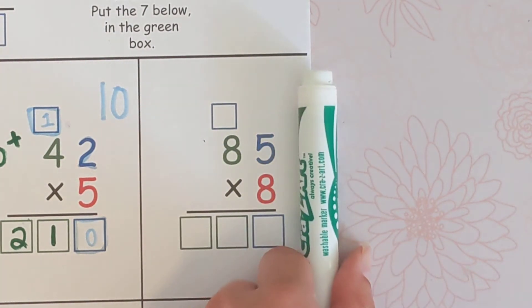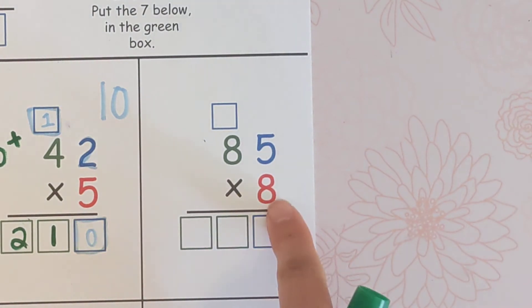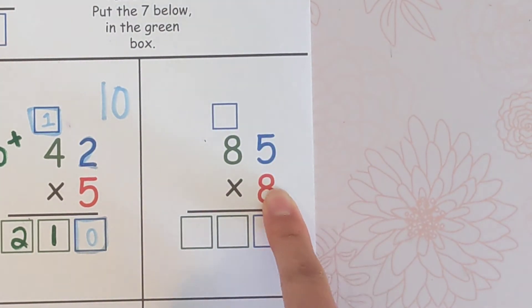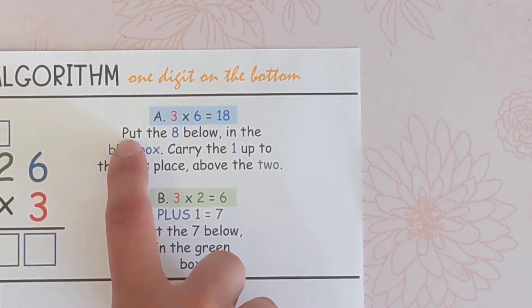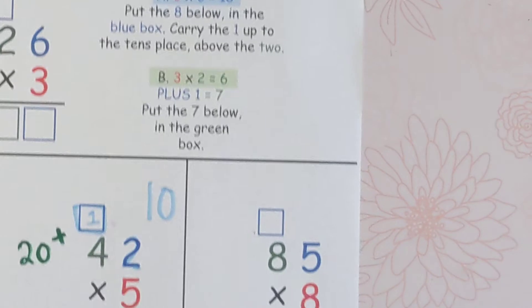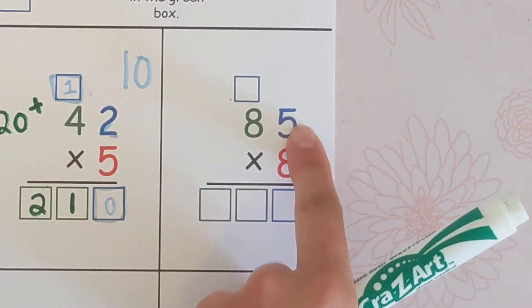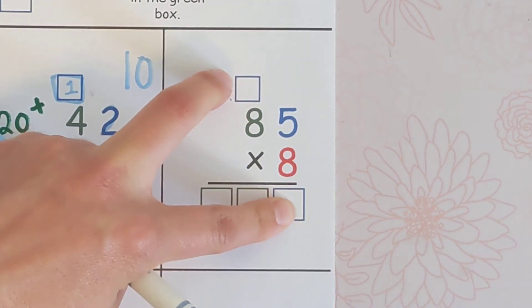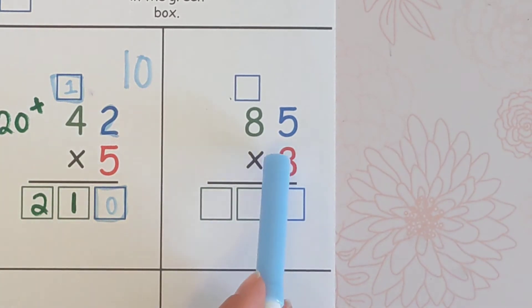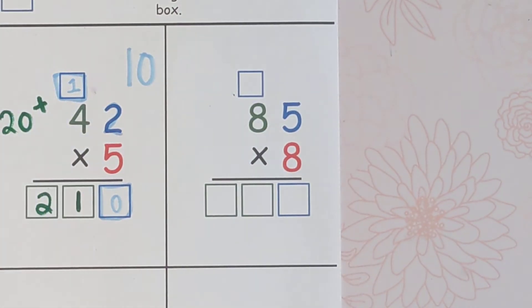We start on the right and we go left. That means we start here, 8 times 5, and then we go left, 8 times 8. So if you think about reading, we go from left to right, but with the standard algorithm, we're going from right to left. So I'm going to do 8 times 5, and whatever I get, I'm going to put in the blue boxes because the 5 is blue. Then I'll do 8 times 8, I'll put it in the green, and then I'll be finished.